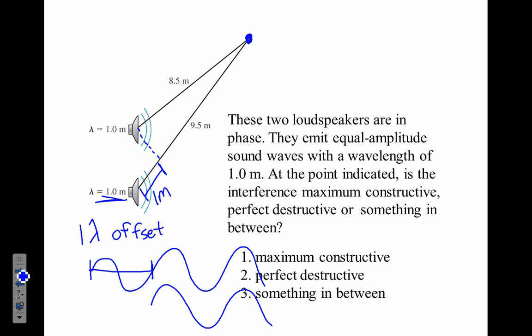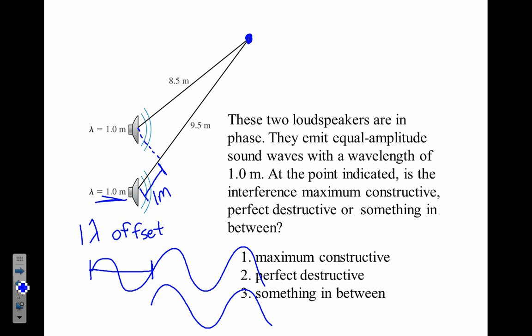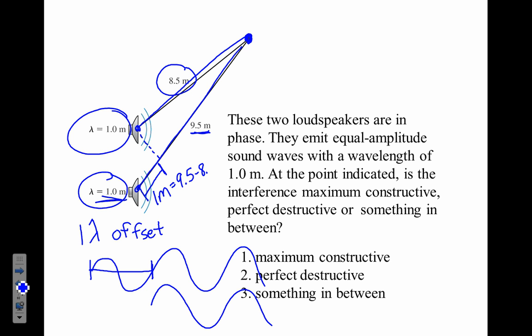You'll see this type of problem in both the Chapter 8 and Chapter 9 sections. The path length difference is 9.5 minus 8.5 equals 1 meter. For these problems you're always just looking for the path length difference. If the path length difference were half a meter — half a wavelength — you'd get destructive interference. If it were a quarter meter, neither fully constructive nor destructive.